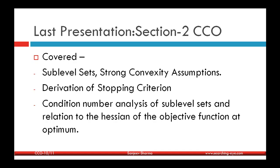To avoid too much theory in this presentation, there will be a separate third presentation in Section 2 that will do the convergence analysis of the line search algorithms — that is, the dependence of these algorithms on the sub-level sets of the objective function, including the eccentricity and condition number of the sub-level sets. We have already covered the condition number analysis and its relation to the Hessian of the objective at the optimum.